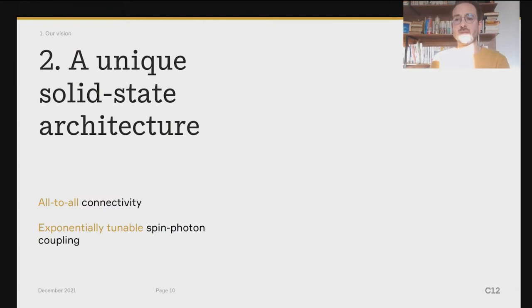And this all-to-all connectivity would not work if we don't have also the ability to turn off the qubits. So what we can do with our technology is that the coupling between the qubits and this resonator, so the spin and the resonator, can be exponentially turned off. Actually, we have designed a proprietary on-off gate. And so turned off, the spin is put in kind of a memory mode.